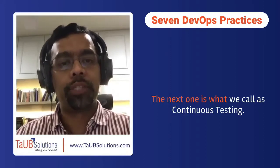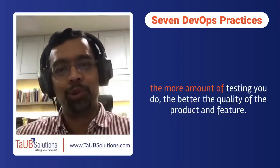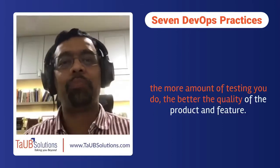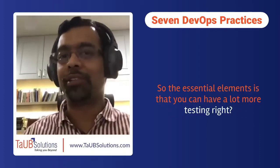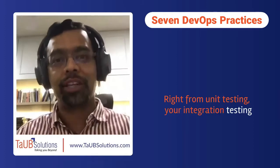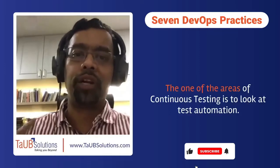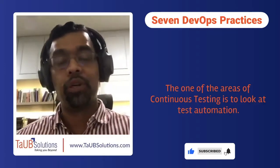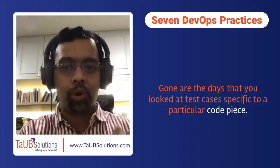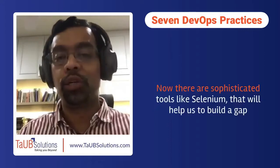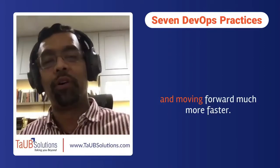The next practice is continuous testing. Throughout your lifecycle, the more testing you do, the better the quality of the product and feature. You can have unit testing, integration testing, stress testing, regression testing — there are multiple modes. One key area of continuous testing is test automation. Gone are the days of test cases specific to a particular code piece. Sophisticated tools like Selenium help build a testing framework and move things forward much faster.